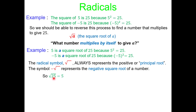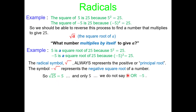So square root of 25 is asking: what number squared equals 25? That answer is 5. We don't say 5 or negative 5. We'd have to actually put a negative sign in front of the radical if we wanted the negative answer.